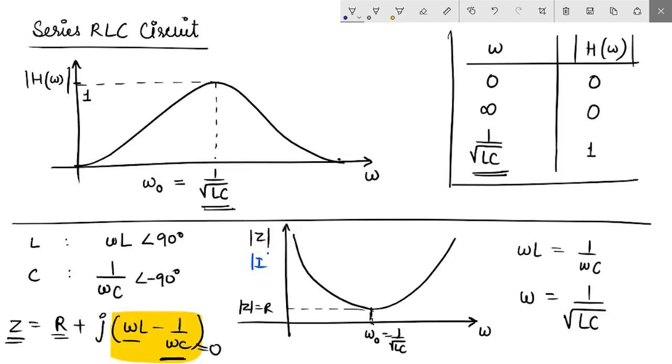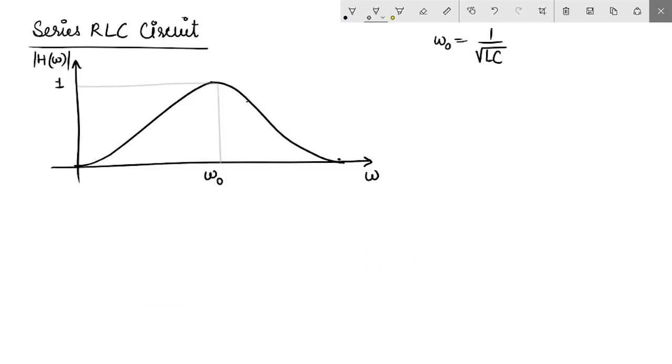if I draw magnitude of current through the circuit, I would find that the current would have a nature like this. Because impedance is minimum at the resonant frequency, the current actually becomes maximum at the resonant frequency. This is how the gain of this filter changes with frequency.